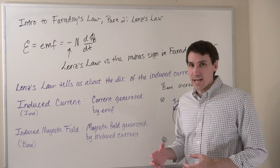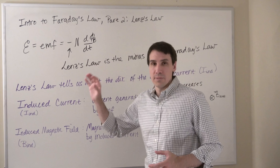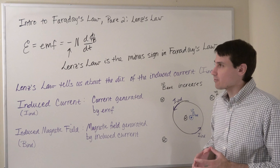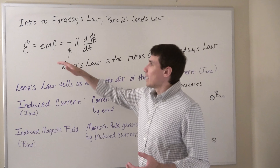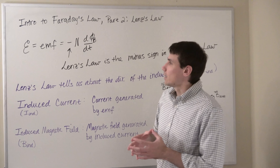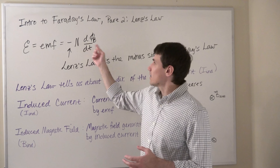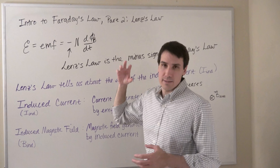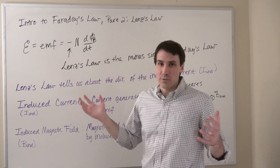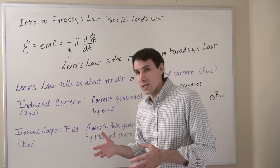In this video, we're going to take the next step in understanding Faraday's law, which is to figure out what this minus sign means and how we can figure out the direction of current flow based on some EMF. Faraday's law says that the EMF, which acts like a voltage, is equal to negative N, where N is the number of loops, times dΦ_B/dt, where Φ_B is the magnetic flux through the loop. In this video, we are not going to calculate any EMFs — we are only going to figure out directions of currents generated by EMFs.